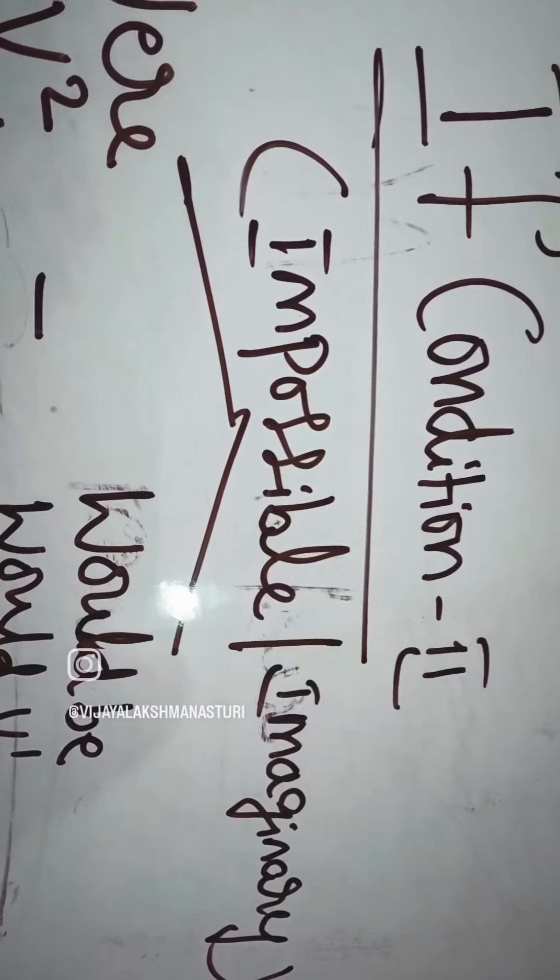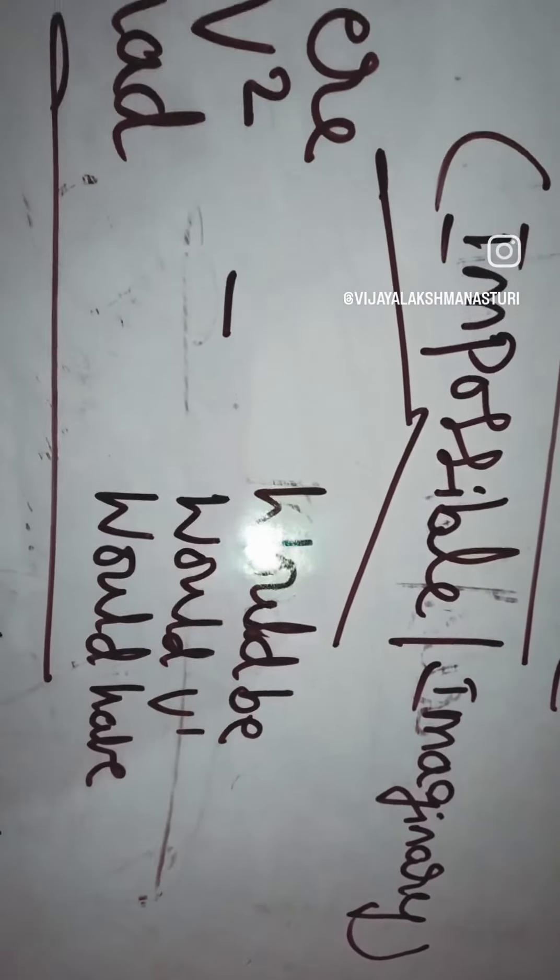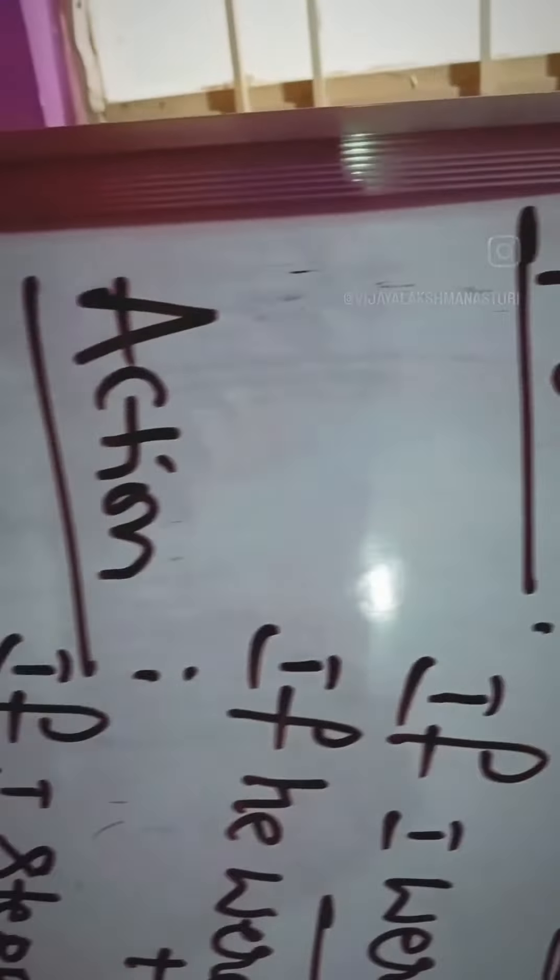Now shall we look at the condition and examples? If condition two, this is called condition impossible or imaginary. Here we discuss only the impossible things or imaginary things. The keywords are were to, had, as well as would be, would be one, would have for all subjects.